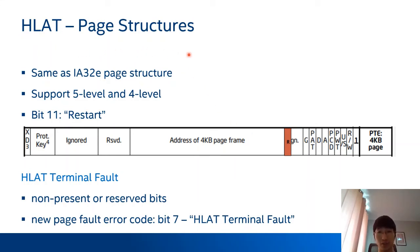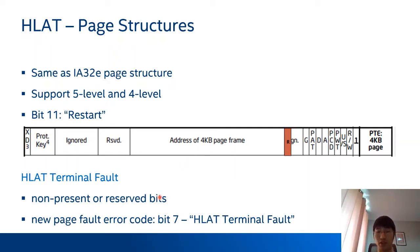This page is about HLAT page structure. HLAT page structures are almost the same as IA-32e page structures. It supports both the 5-level and 4-level hierarchy. Bit 11, which was previously ignored, is repurposed as the restart bit — setting this bit causes the page walk to restart from the guest CR3 page table. Regarding page faults, if the page walker encounters a non-present entry or a misconfigured entry — for example, if reserved bits are set in the HLAT page structure — the CPU reports a page fault with a new page fault error code. Bit 7 indicates the fault is an HLAT terminal fault, and the other page fault error code bits are set as usual.